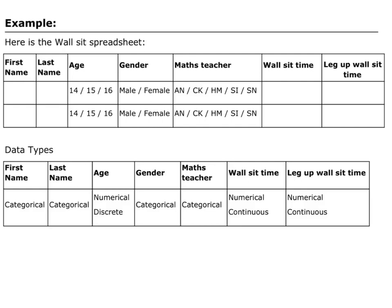Looking at the Walsett spreadsheet, let's decide what type each variable would be. Under first name, I would write the word Elizabeth — I'm writing words, and words are a category, so first name is categorical. Under last name, I would write my surname, Sneddon — again, that is words, so that is categorical data.